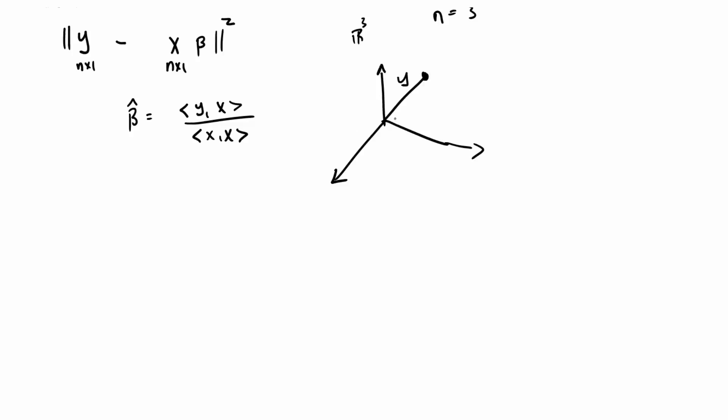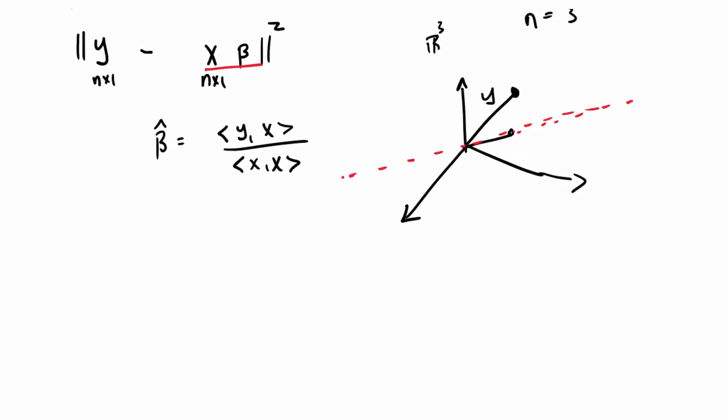Our x vector lives, let's say, here, and then the space x times beta just lives along that line.